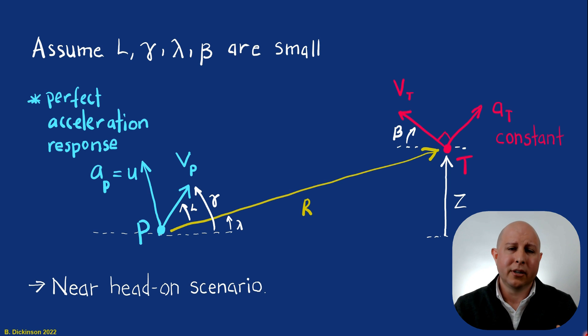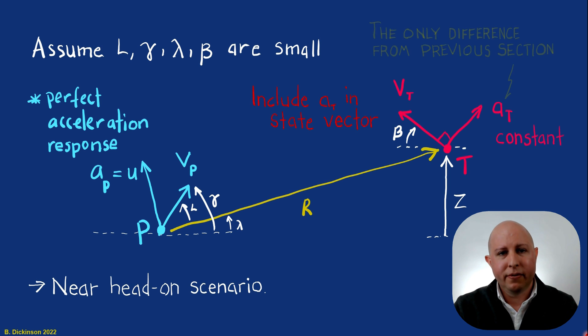Our pursuer acceleration is assumed to be perfect. That means that when the guidance law, whatever we derive, when it's commanding an acceleration, that pursuer instantaneously achieves that command. So really, the only difference between what we had before and what we have now is this acceleration term. Before we ignored it. Now we have it.